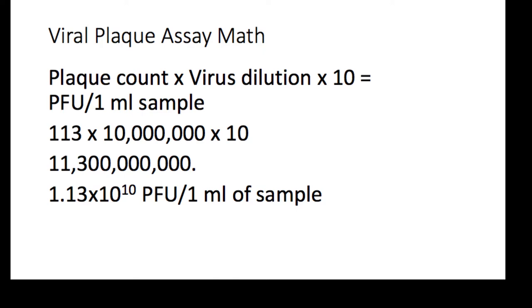Scientific notation means you have to give us a number between 1 and 9. This, so far, is not a number between 1 and 9. So, what we need to do is we need to move that decimal point over until we have a number between 1 and 9.